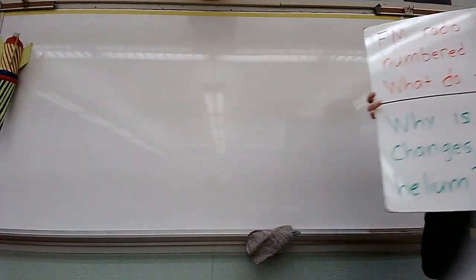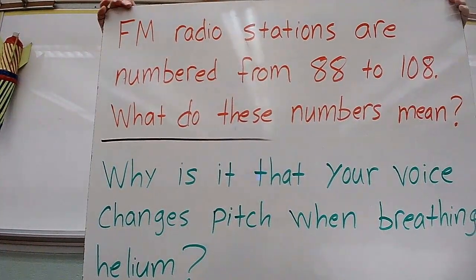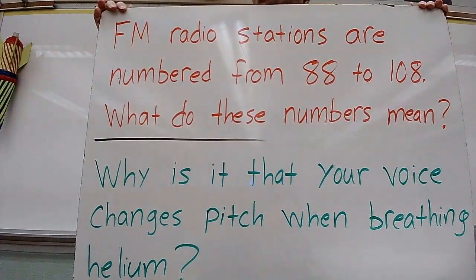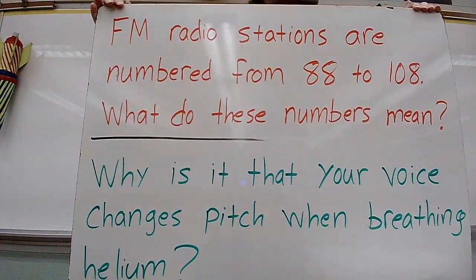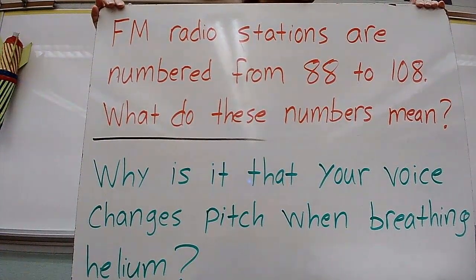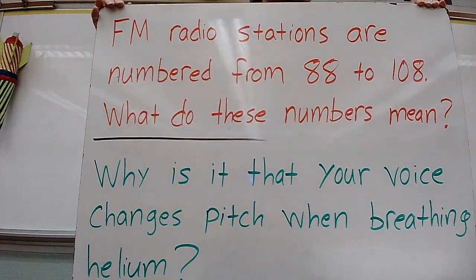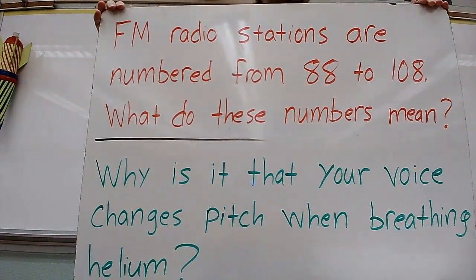All righty. So the questions today, we've got two of them. FM radio stations are numbered from 88 to 108. Any guesses on what those numbers mean? They're the frequency that the station's on? Exactly. So each of these are frequency.